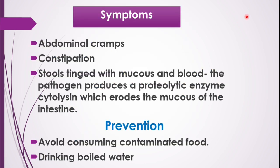Let us now discuss about the symptoms of the disease. The disease mainly causes abdominal cramps — severe pain in the abdominal region. The second symptom is constipation alternating with diarrhea, which is a typical symptom of this disease.